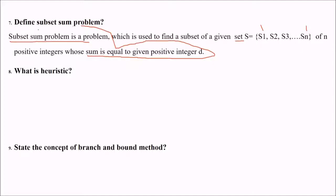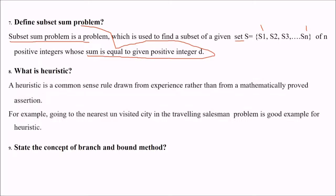What is heuristic? This word will come often in various fields of computer science. Heuristic is a common sense rule drawn from experience rather than mathematically proved assertion. Just for instance, going to the nearest unvisited city in the traveling salesman problem can be a good heuristic.